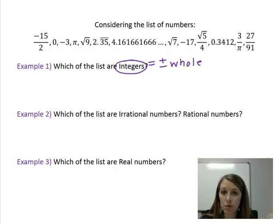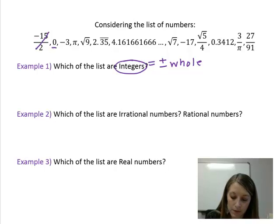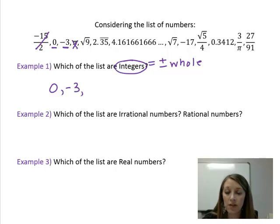I'm just going to work from left to right of this list. Negative fifteen over two, that's of course a fraction, so it doesn't go in there. Zero is a whole number, so that fits in there. Negative three is a whole number, so that fits in there. Pi does not fit in there.